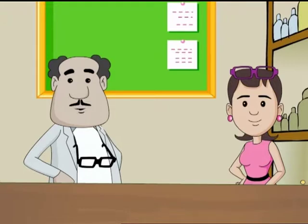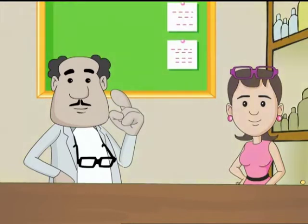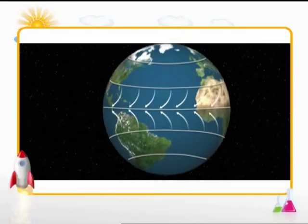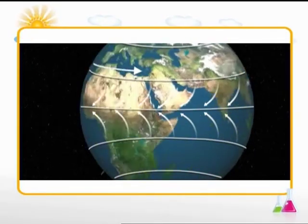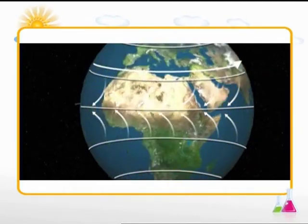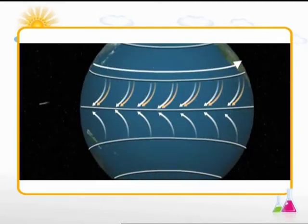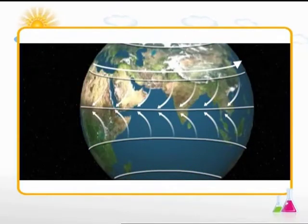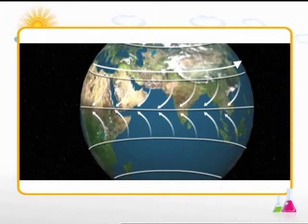Back in the virtual world, the direction of the wind changes due to the rotation of the earth. It blows to the right in the northern hemisphere and to the left in the southern hemisphere.